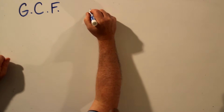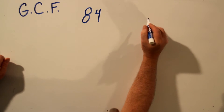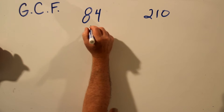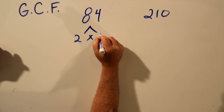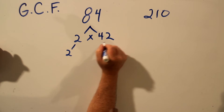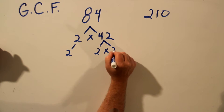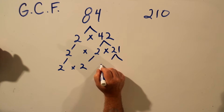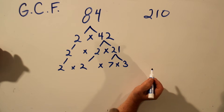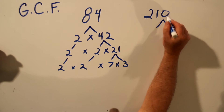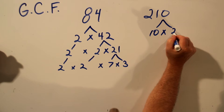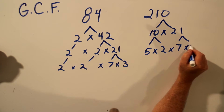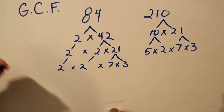We'll do another example. Find the greatest common factor for 84 and 210. We'll start by finding the prime factors for each number. 84 is even, so we'll go 2 times 42. 42 would be 2 times 21, and 21 is 7 times 3. And those numbers are all prime. So there are our two lists of prime numbers.